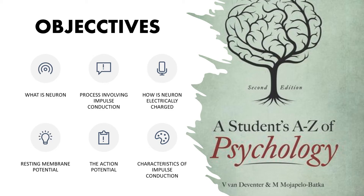I will be using 'A Student's A to Z Psychology' to teach you this chapter. For today's video, our objectives are to learn what a neuron is, the processes involving impulse conduction, how a neuron is electrically charged, resting membrane potential, action potential, and the characteristics of impulse conduction.